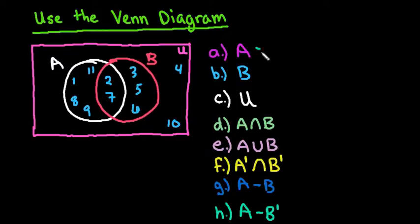So the first thing that it asks us to find is all of the elements that are just in set A. So for set A what I want to do is look at the white circle here and find any number that is contained anywhere inside of there. Typically we write it in order from smallest to largest so we can see that inside of this one we have 1, 2, 7, 8, 9, and 11.